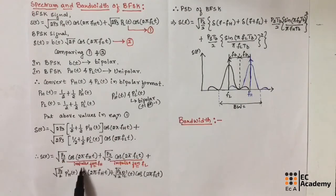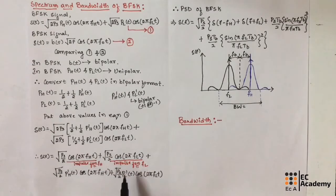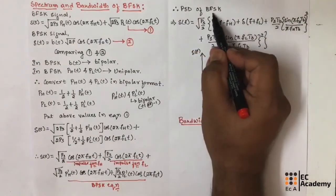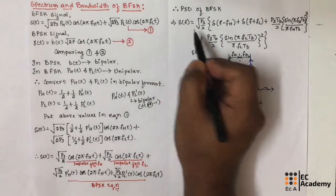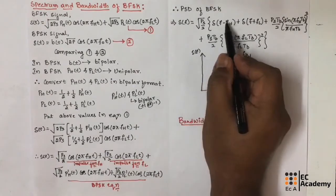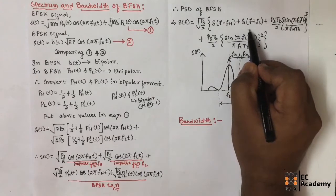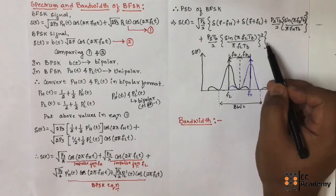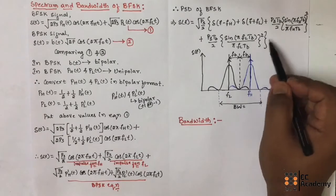In this equation, the first term represents a single frequency impulse function at frequency fh, and the second term represents a single frequency impulse function at frequency fl. The third and fourth terms represent the BPSK equation. Using this analysis, we can write the power spectral density of the BFSK signal. We can take sqrt(Ps/2) as common; the first term is the impulse function centered at fh, the second is centered at fl, and the third and fourth terms are taken from the power spectral density of the BPSK signal.